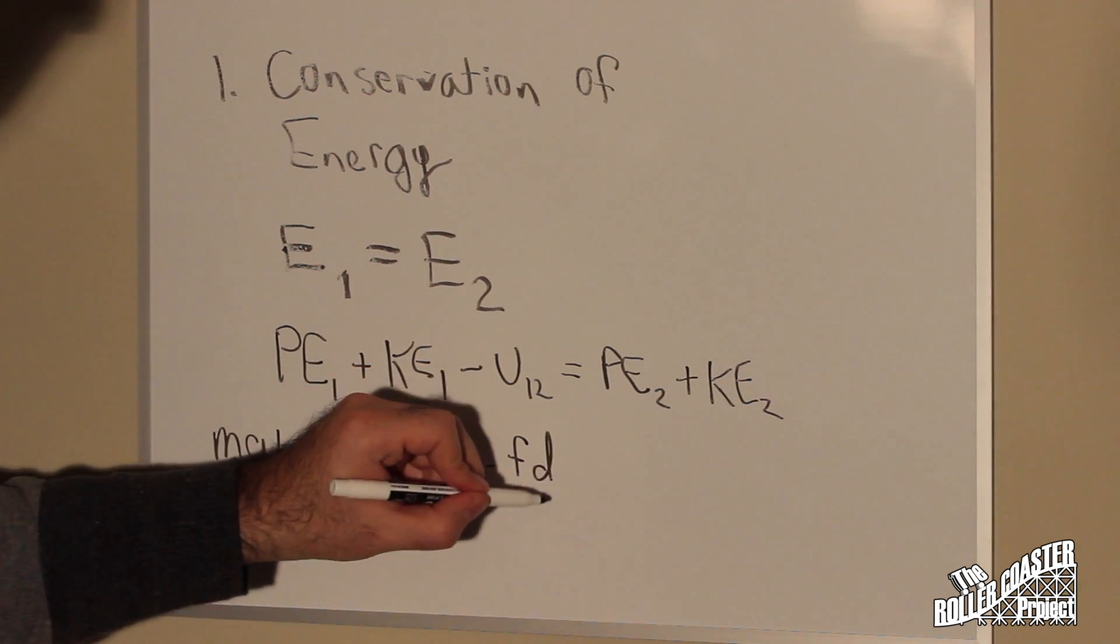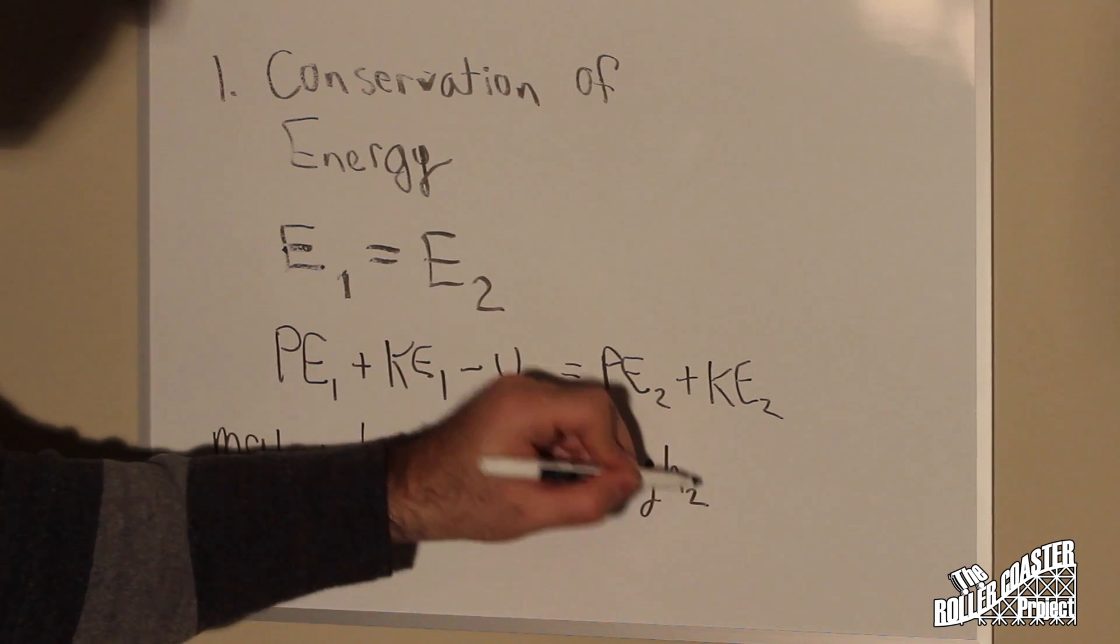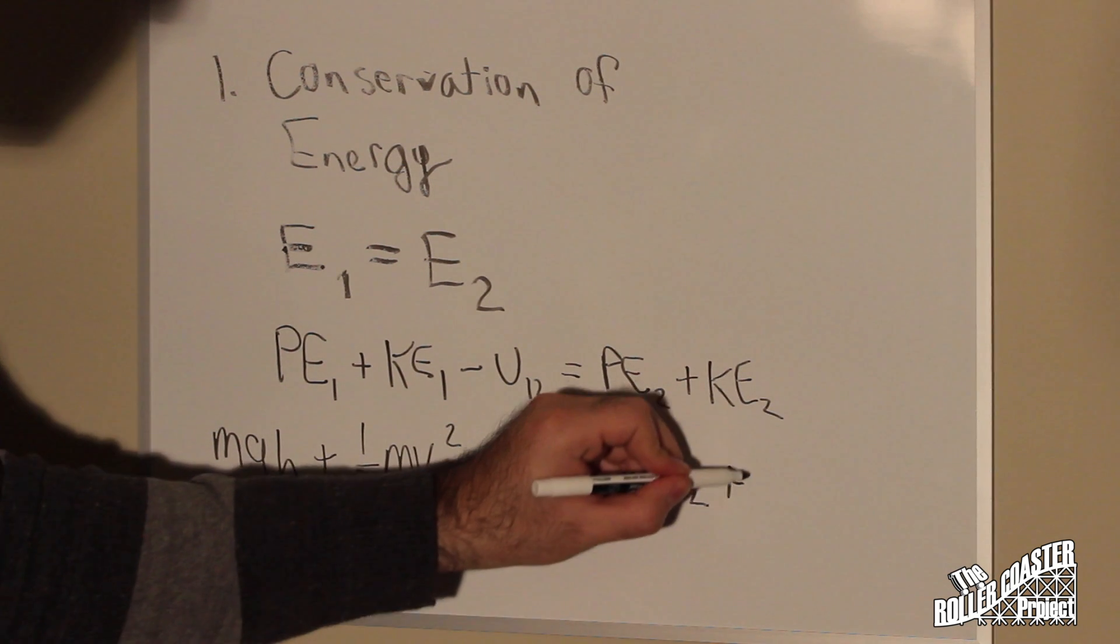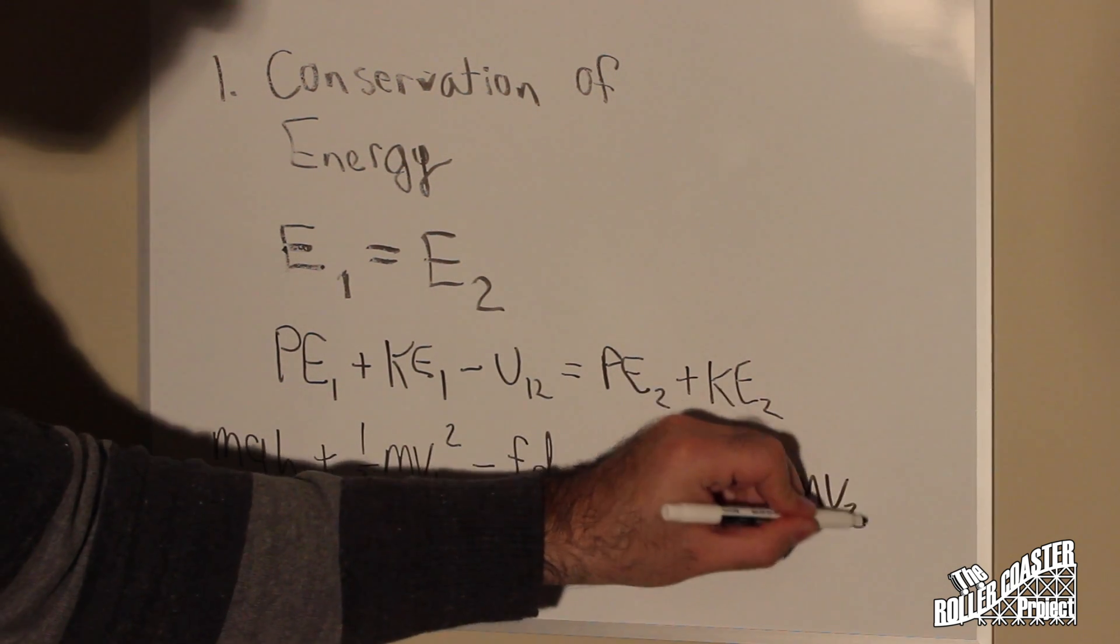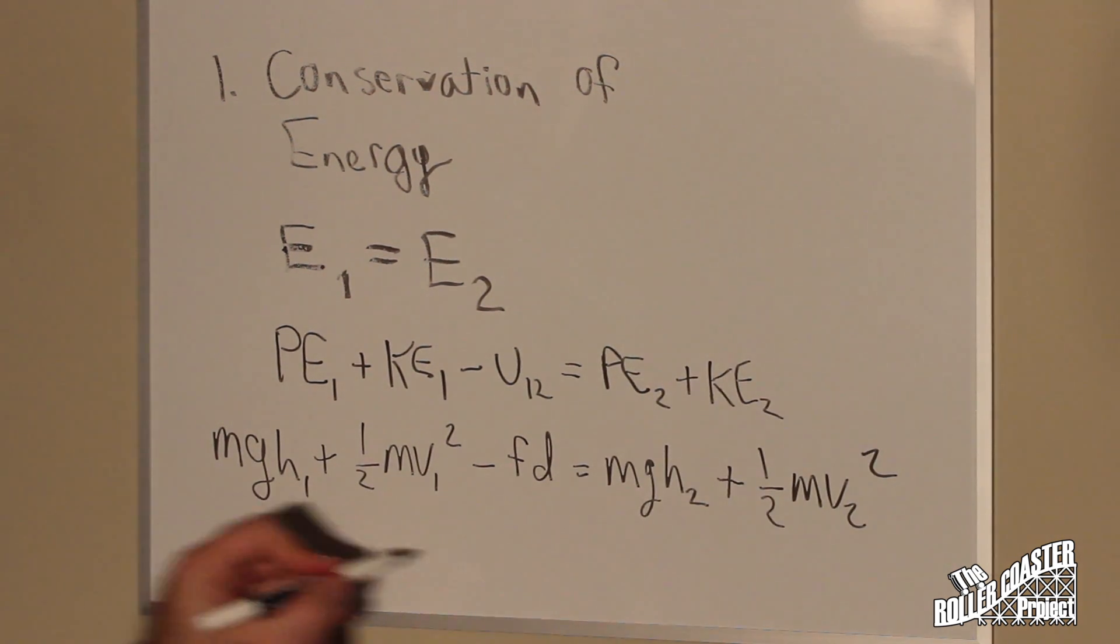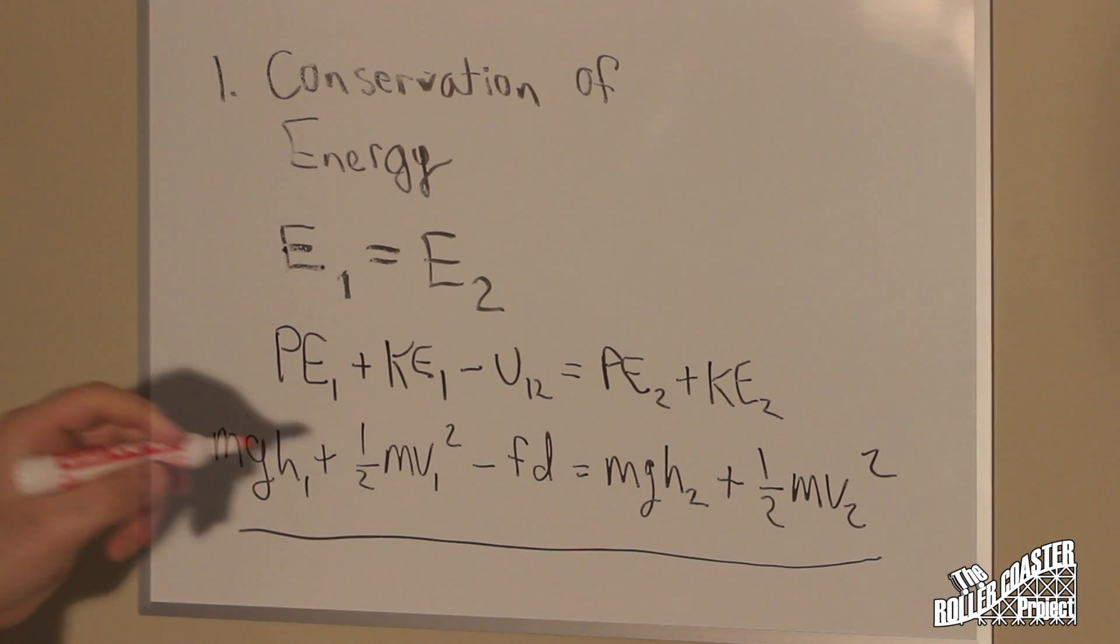So we decided, okay, for our work, we have a friction value that we lose every inch or foot. In our case, we're using inch, but for a ride, it would be in feet. And every foot that we move forward, we lose so much energy. This is our equation.